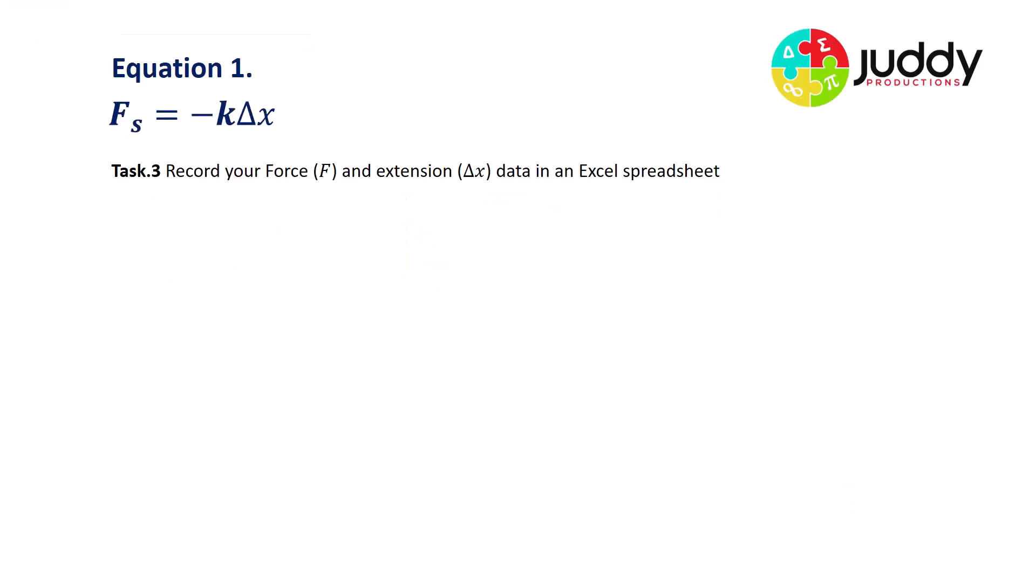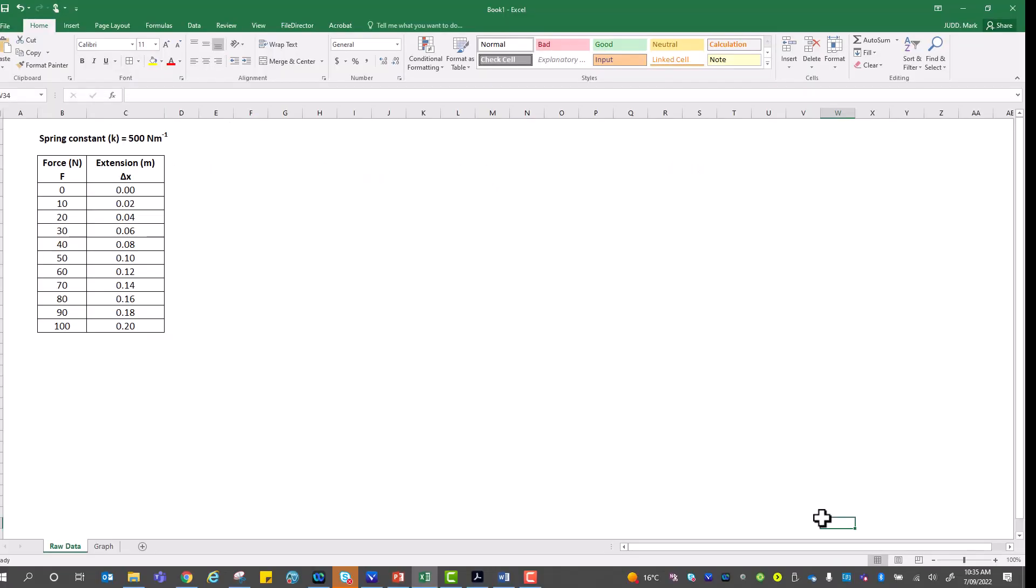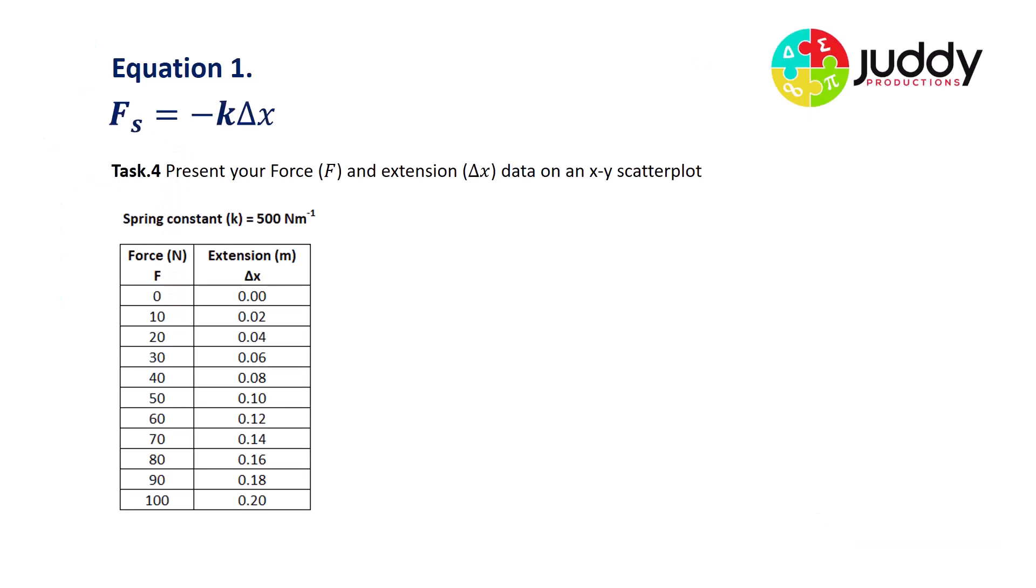The first step is to record our force and extension data in an Excel spreadsheet. So I've entered this data into an Excel spreadsheet. You can see that I've stated my spring constant K at 500 newtons per meter, and I've listed my force in my first column measured in newtons and my extension in the second column measured in meters.